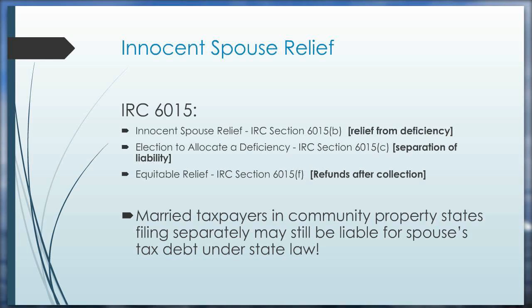The separation of liability under 6015(c) is particularly of interest in community property states. The IRS does have to apply state community property laws to innocent spouse relief situations. Community property is a very in-depth and involved subject that could take an hour on its own, so that's for a future presentation. Section 6015(f) provides what's called equitable relief — the effective tax administration equivalent from the offer in compromise world applied to innocent spouse relief. Equitable relief allows the IRS discretionary granting of relief after collections activity has already taken place, and can even provide for refunds after collection.